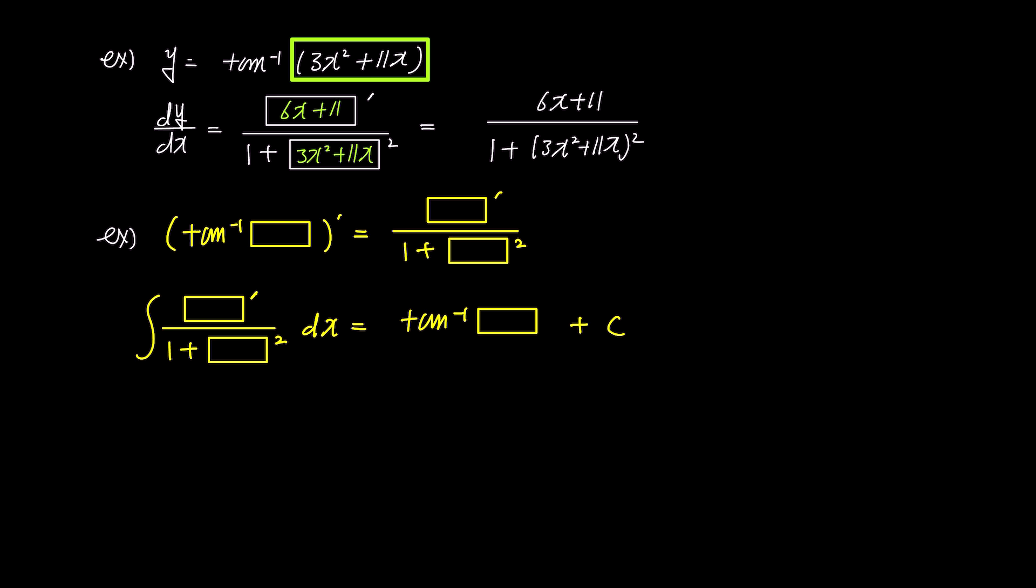Here is an example. The integral of 1 over x times 1 plus ln x squared. We can easily find the answer by comparing what is box and what is box prime in the formula above. By moving the x in the denominator to the numerator, the expression becomes the integral of 1 over x over 1 plus ln x squared.